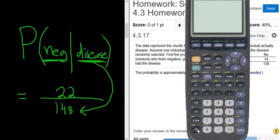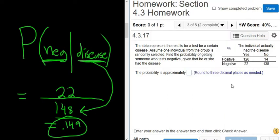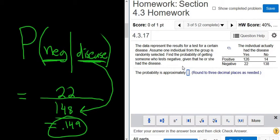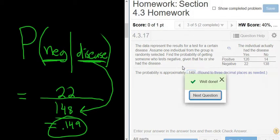So let's see. So it's 22 over 148. So 0.149, that's the answer. So 0.149. Now let's try it. So 0.149. And that's it. That's the entire question. I hope that made sense.